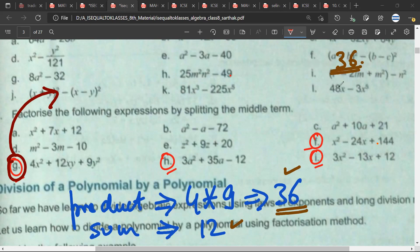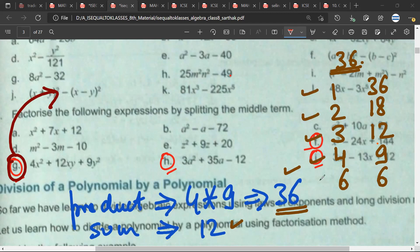Just select the 36 and start finding the factors of 36 like this. So if 1 is one of the factors, the other would be 36. If 2 is one factor, other would be 18. If 3 is one factor, the other would be 12. If 4 is one factor, the other factor would be 9. If 6 is one of the factors, the other factor would be 6.